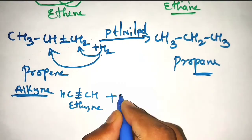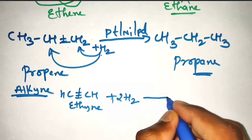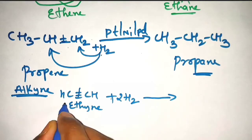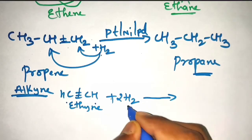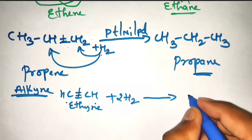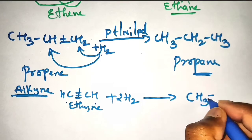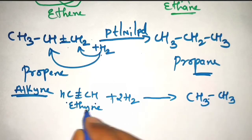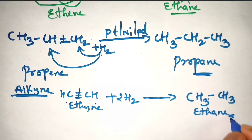2 hydrogen will come here, 2 hydrogen will come here, so total 4 hydrogens. It will get converted into CH3–CH3 — ethyne to ethane.